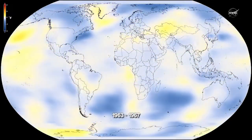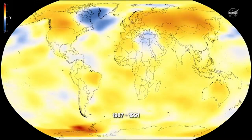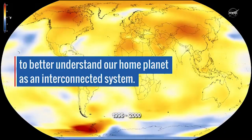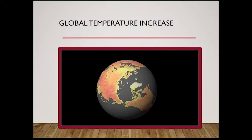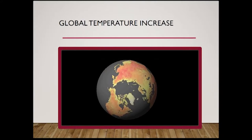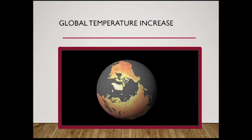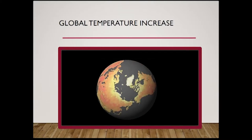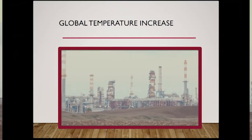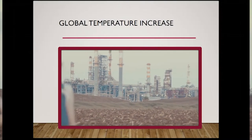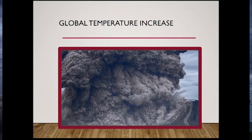Scientists have pieced together a record of Earth's climate dating back hundreds of thousands — and in some cases hundreds of millions — of years, by analyzing indirect measures such as ice cores, tree rings, glacier lengths, pollen remains, and ocean sediments, and by studying changes in Earth's orbit. The record shows that the climate system varies naturally over wide time scales. Climate changes prior to the Industrial Revolution in the 1700s can be explained by natural causes such as changes in solar energy, volcanic eruptions, and natural changes in greenhouse gas concentrations.